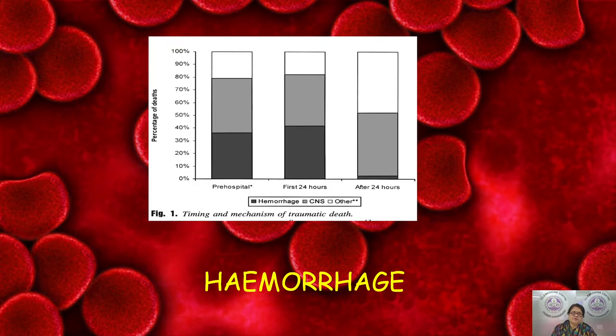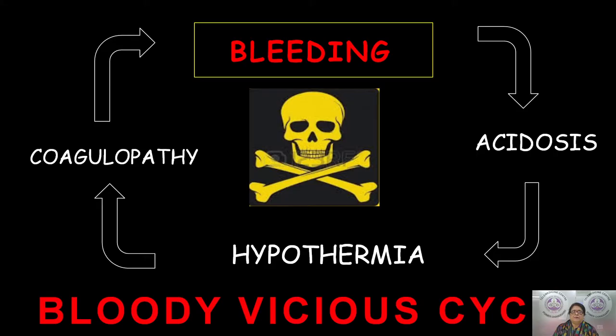This topic is about those first 30 to 60 minutes when the patient is acutely bleeding. When the patient is acutely bleeding, there is a bloody vicious cycle which starts, encompassing acidosis, hypothermia, and coagulopathy. This chart is not new to any of us, but I would like to go into more detail about why this acidosis occurs, and why hypothermia and coagulopathy develop.